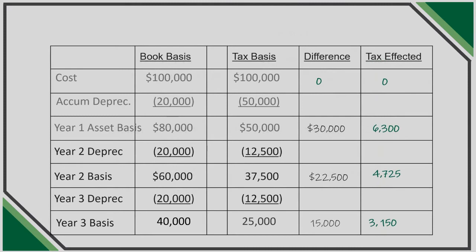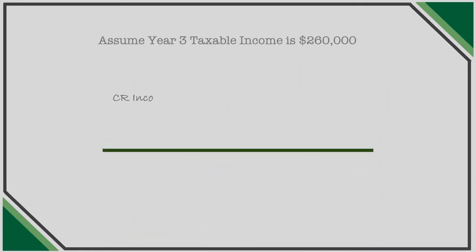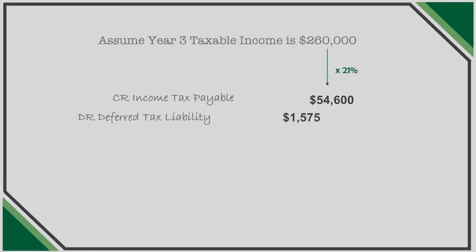In year 3, we continue on with the same set of steps: compare the prior year difference to the current year difference. In this example, we again get a decrease of $1,575, so we're adjusting our deferred so that the ending balance is $3,150. Remember, these are liabilities and assets, so they carry over from year to year on the balance sheet, and we're just trying to adjust the difference with our journal entry to get to the right ending balance. We compute income tax payable by multiplying current year taxable income by 21% to get $54,600. We debit our deferred tax liability to continue decreasing the book-tax variance by $1,575, and finally plug income tax expense so that our journal entry is in balance and reflects actual tax recorded on book income, without consideration of timing differences between book and tax rules.